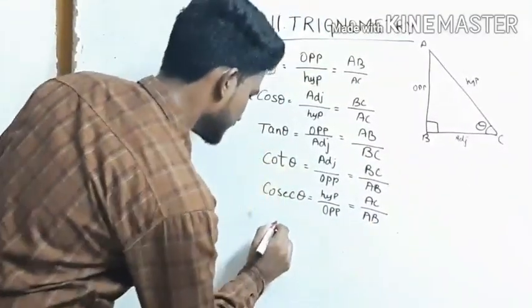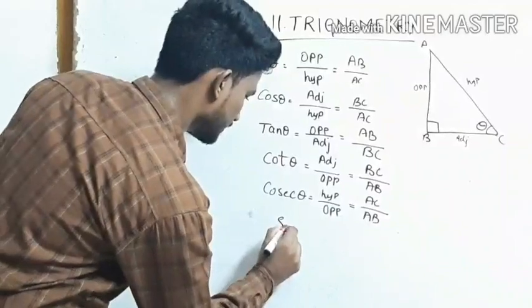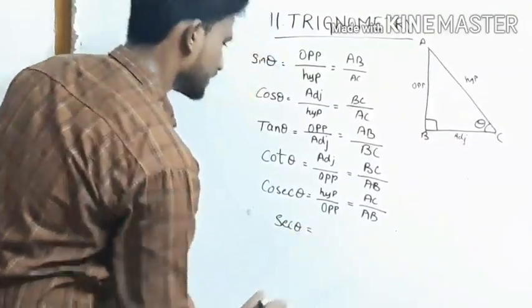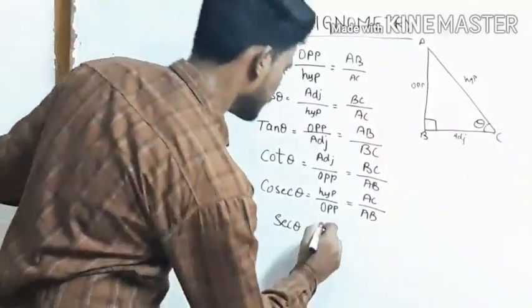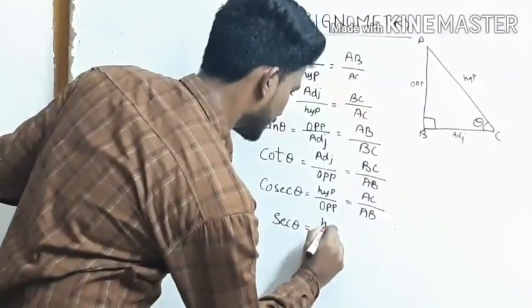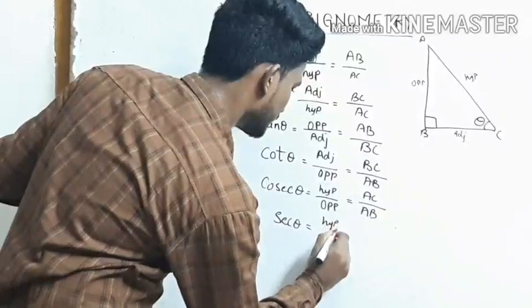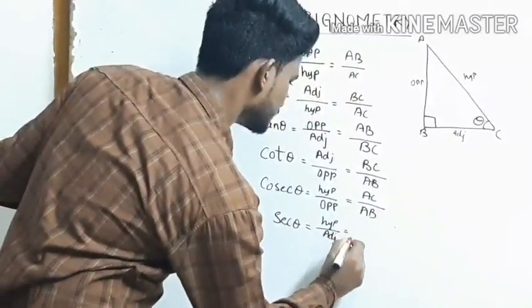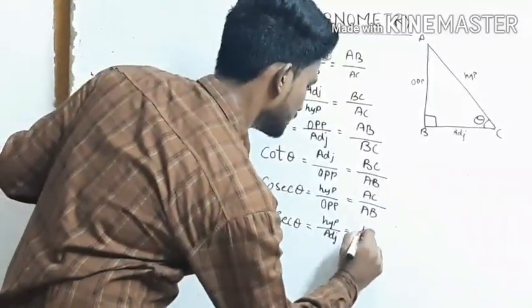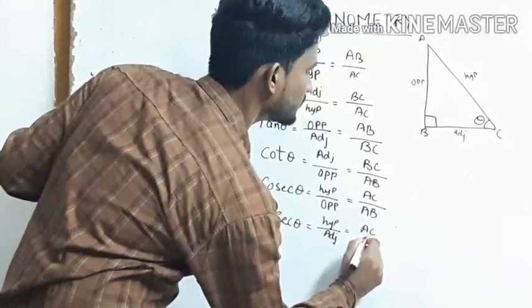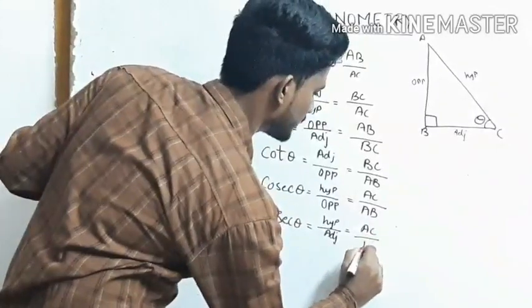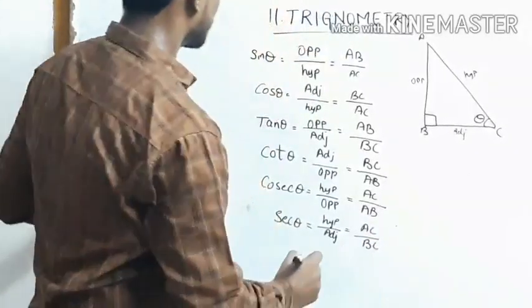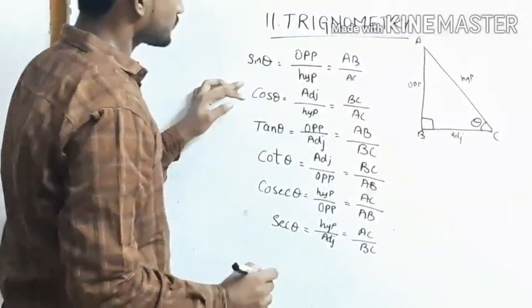Next, secant theta. Secant theta equals to hypotenuse by adjacent. Secant theta equals to AC by BC.